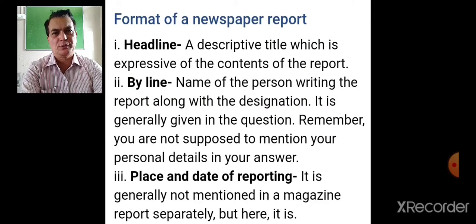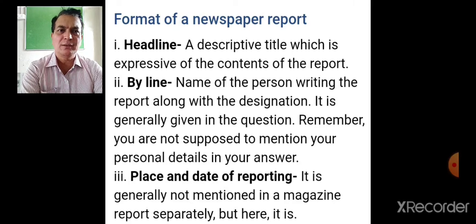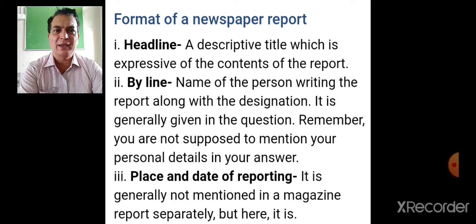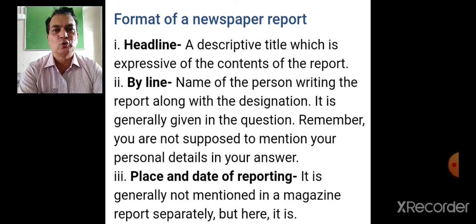Now for the format of a newspaper report. In a magazine report, you have the title, byline, and content. But in a newspaper report you must be more careful. There is a headline — a descriptive title — and a byline giving the name of the writer, just as in a magazine report. However, what is very important and different in a newspaper report is the dateline: you must mention the place and then the date. This is generally not mentioned in a magazine report but is required in a newspaper report.